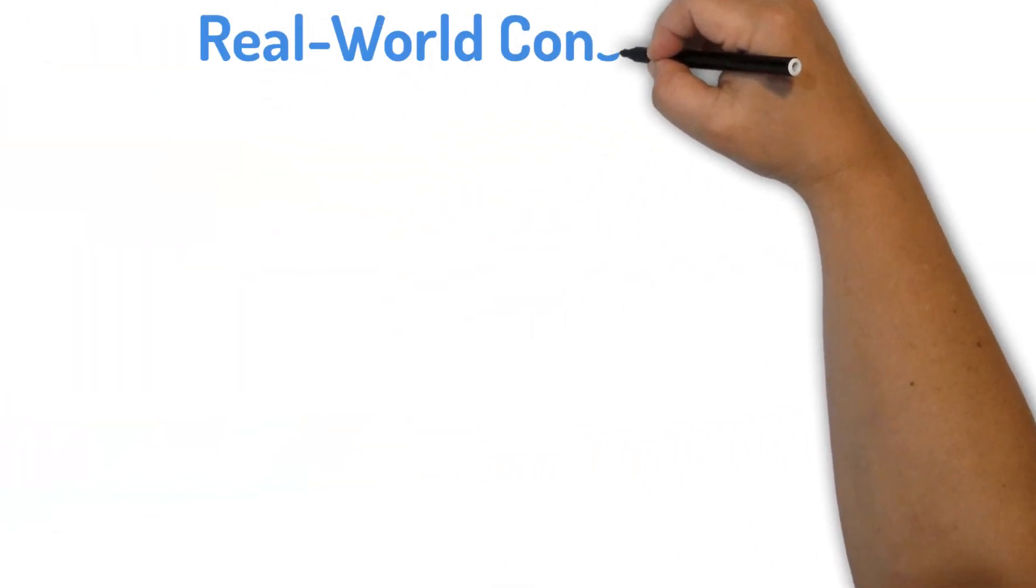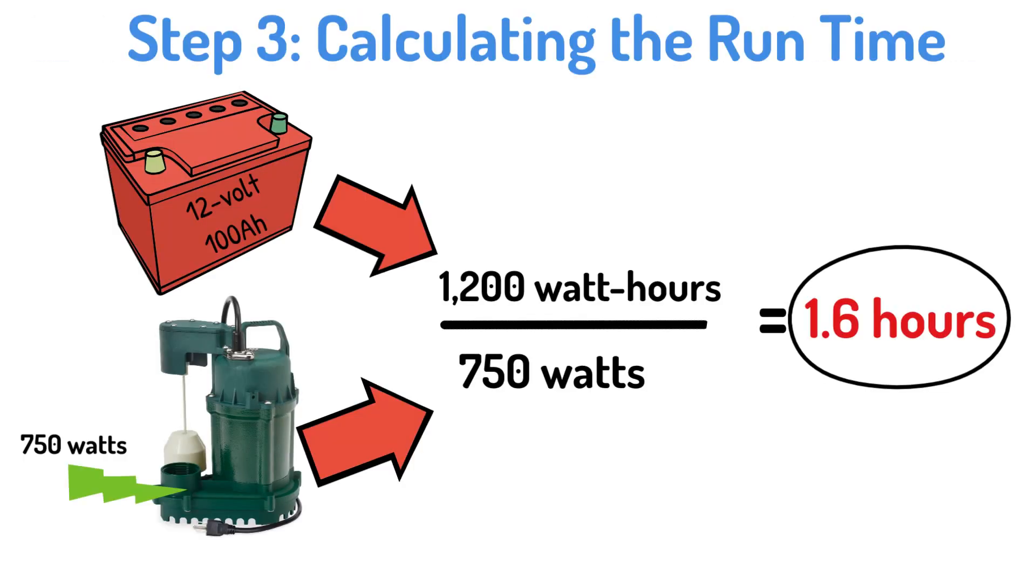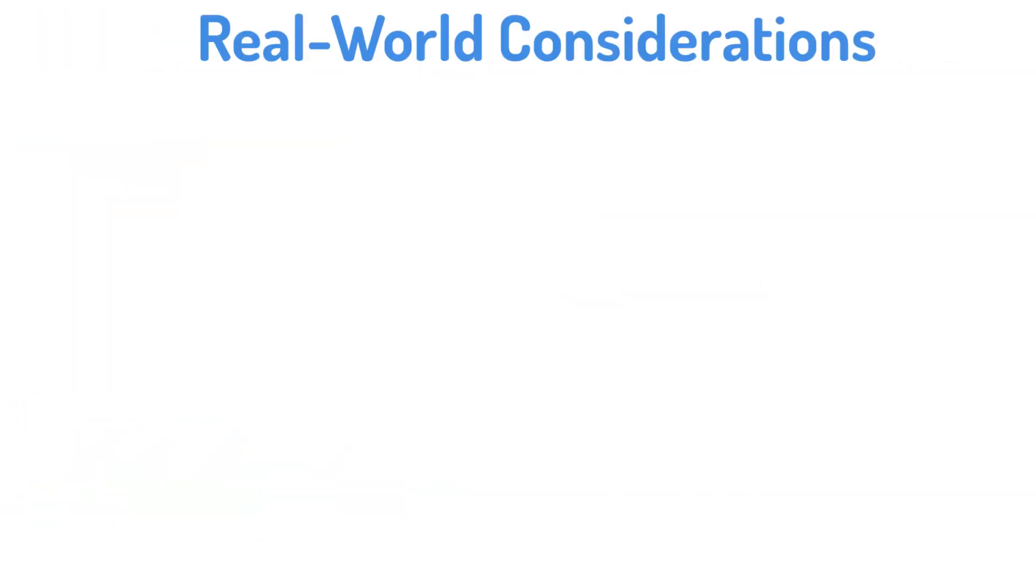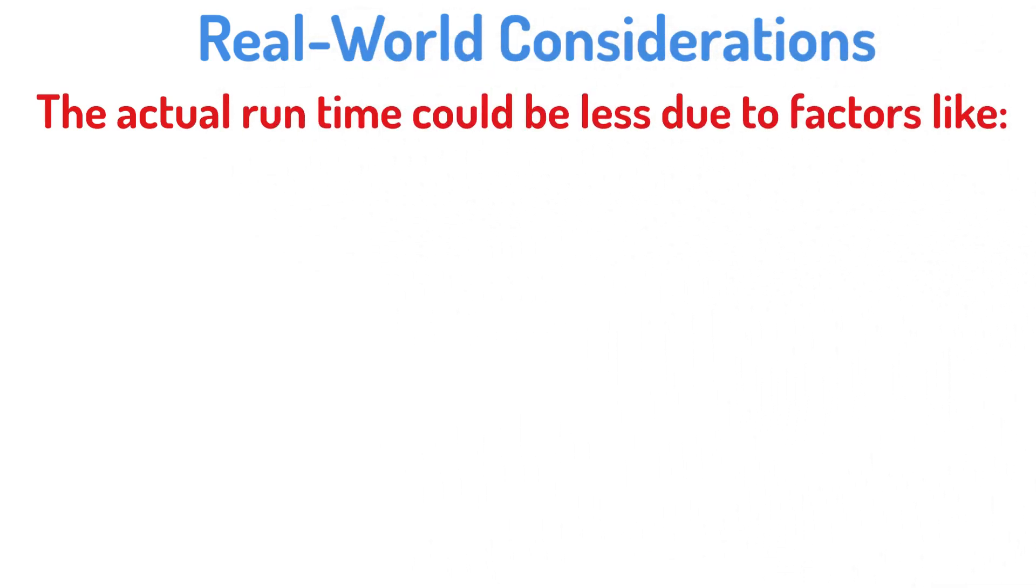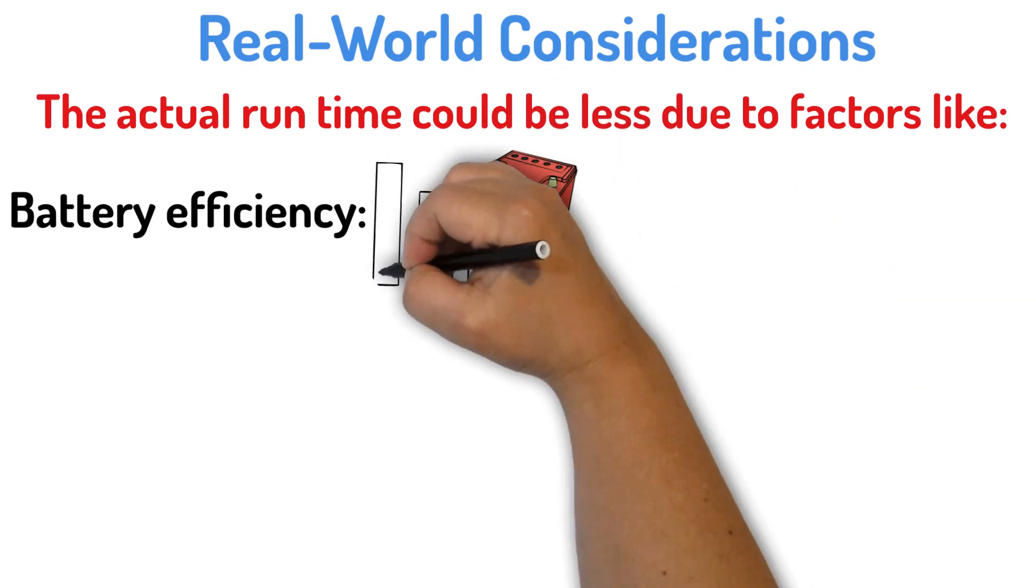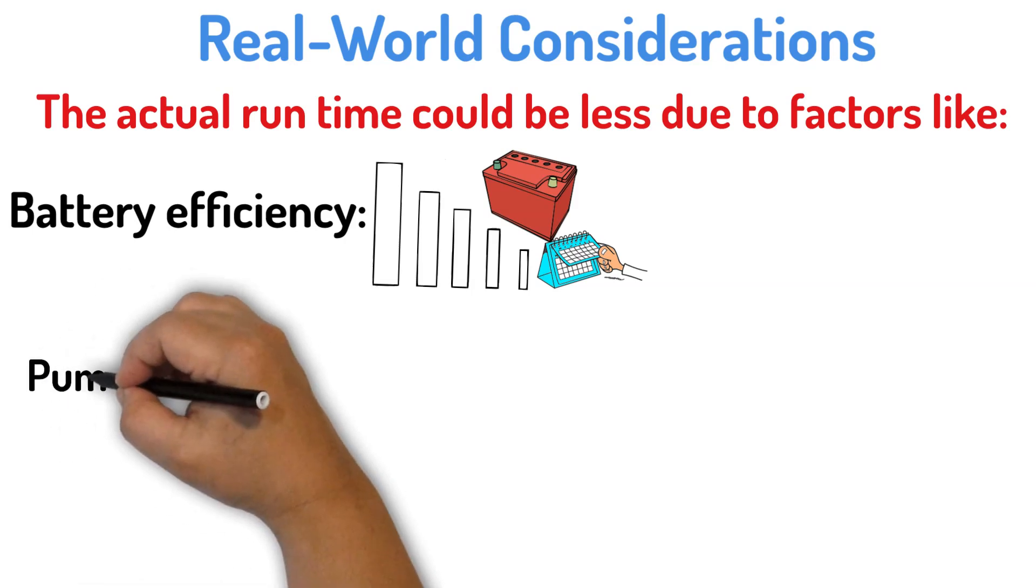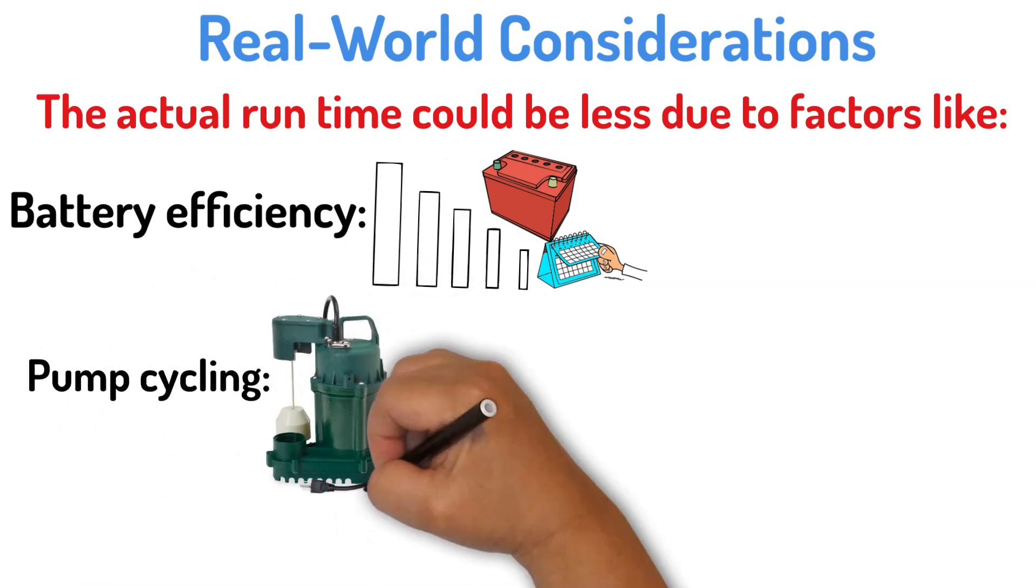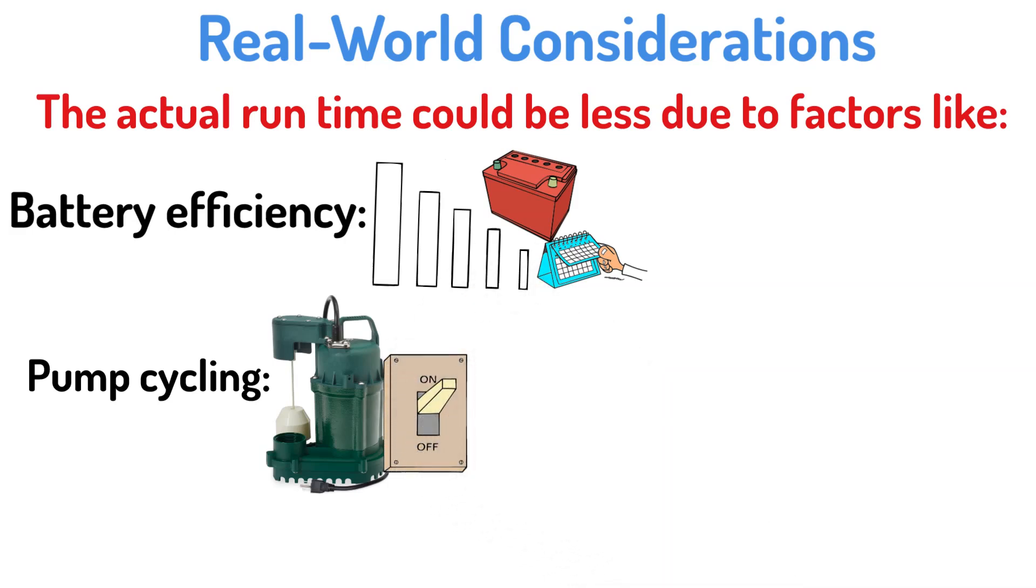Real-world considerations. But of course, this is just a theoretical calculation. In real-world conditions, the actual run time could be less due to factors like battery efficiency. Batteries lose efficiency over time, meaning they might not deliver the full 1,200 watt-hours. Pump cycling. Sump pumps often cycle on and off, so the run time could be longer if it's not continuously running.